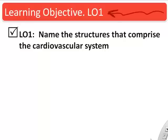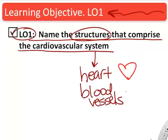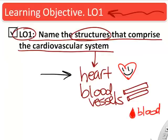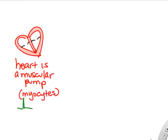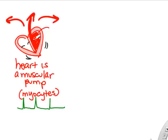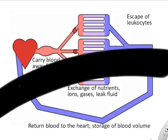Our first learning objective is to introduce the structures of the cardiovascular system. The heart is our pump. Blood vessels are the tubes that carry blood around the body. The heart is basically a muscular pump — cardiac myocytes allow it to contract and push blood and create pressure. The heart pumps out to the body and to the lungs.